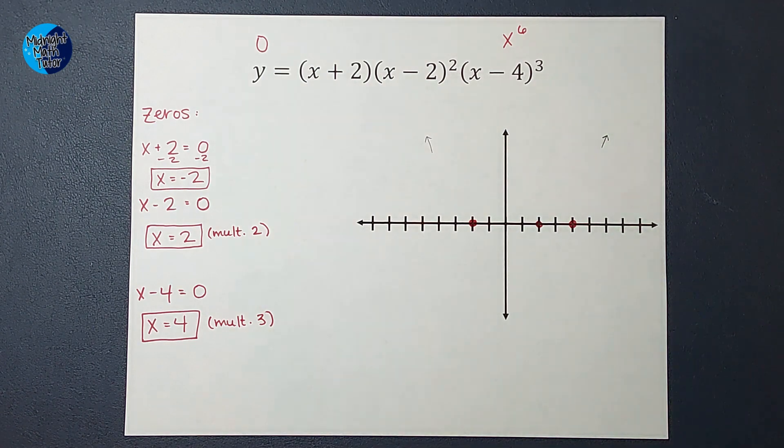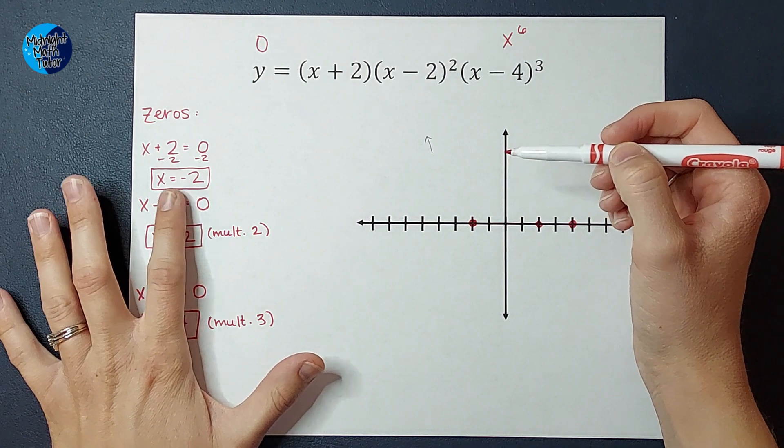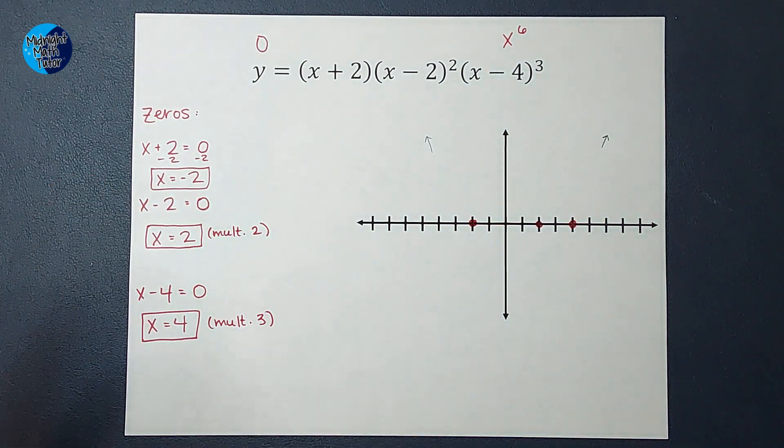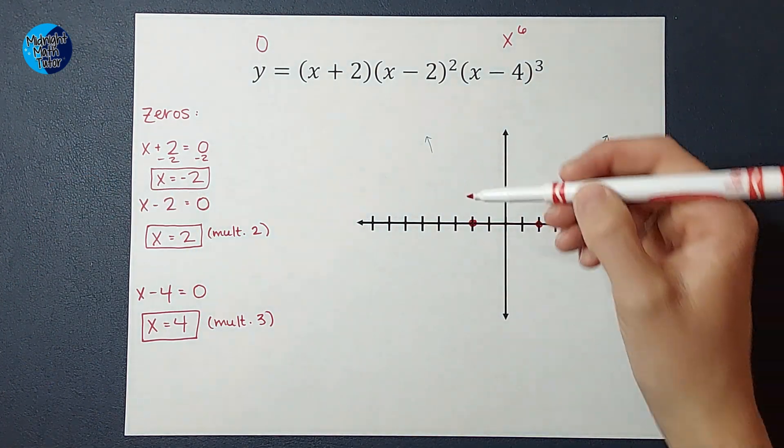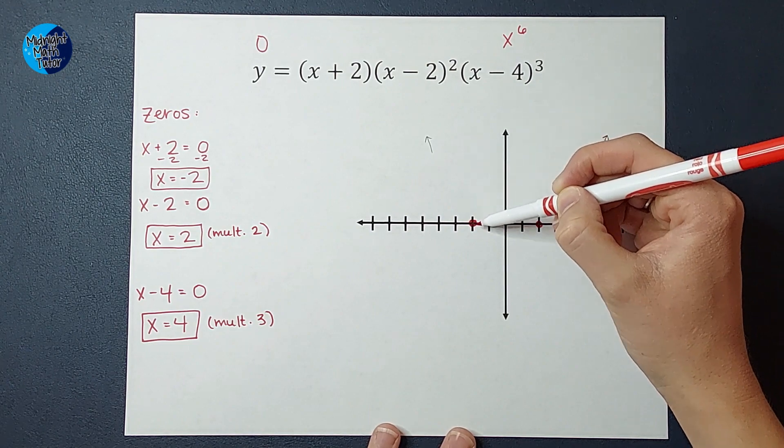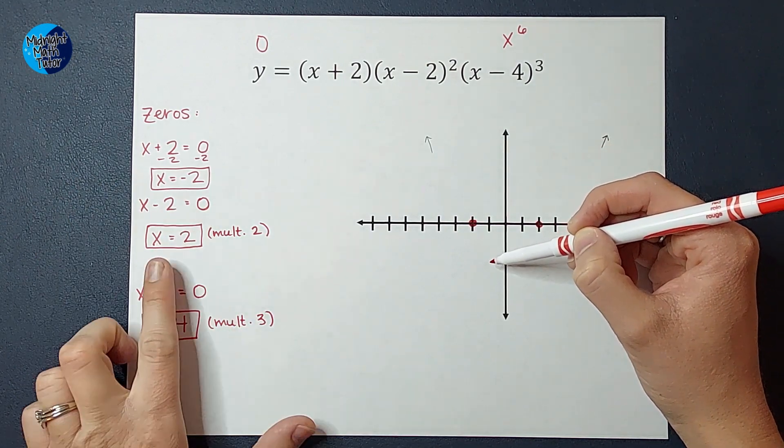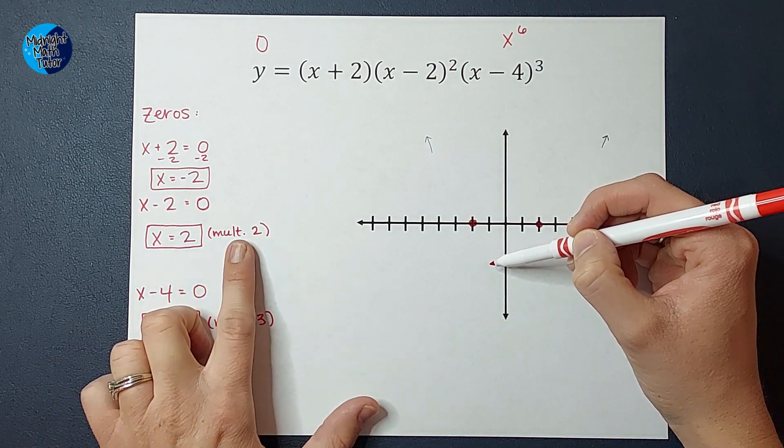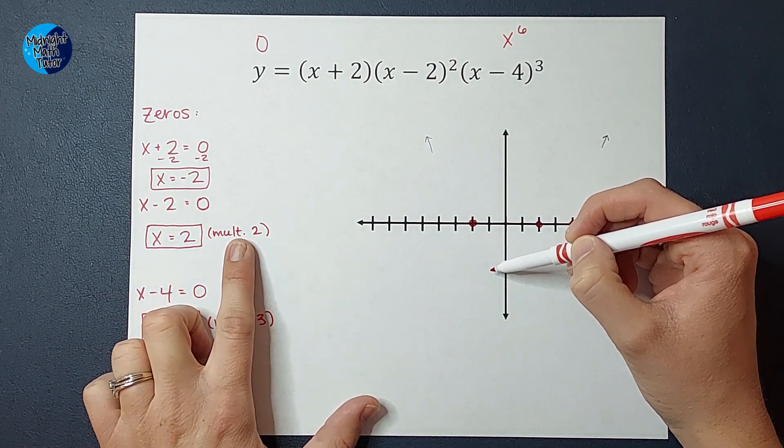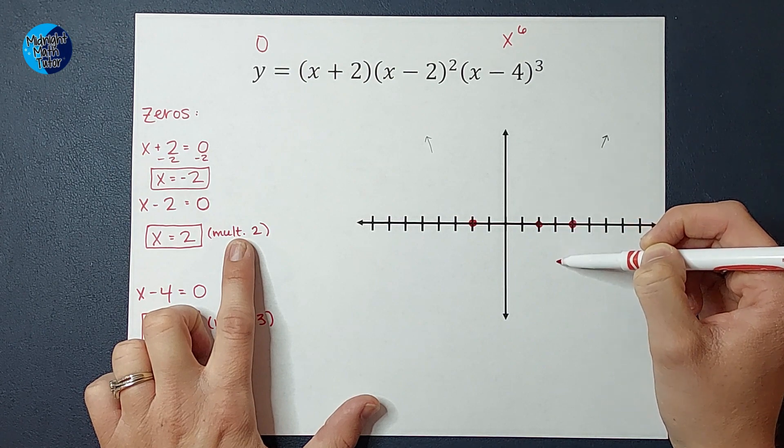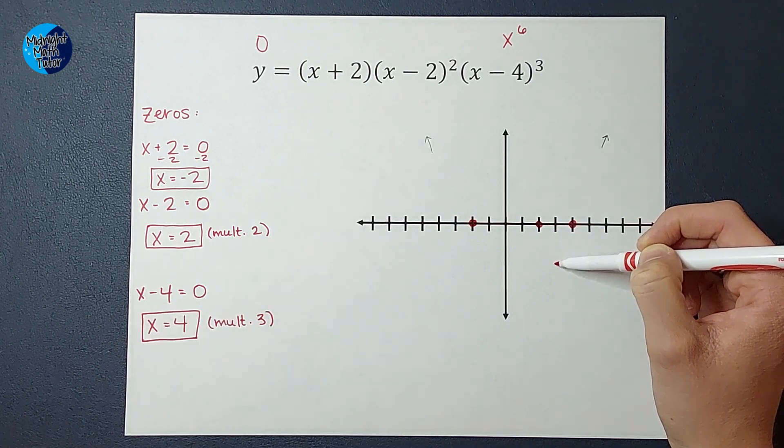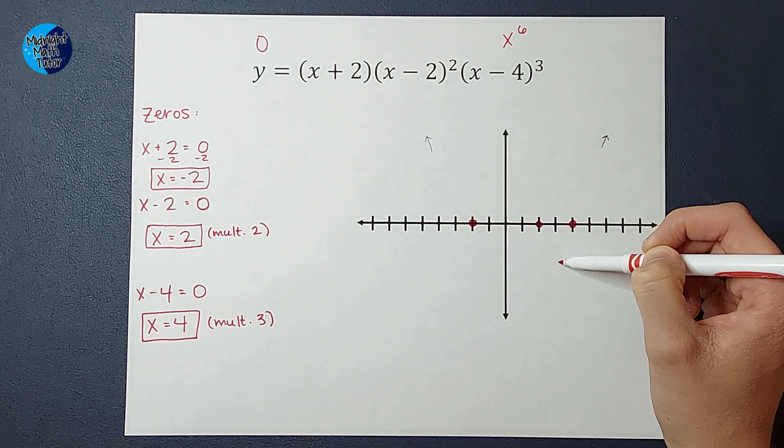So, for example, I've got x equals negative 2. There was just one of those. So it really had a multiplicity of 1. So my graph is going to go through the point at negative 2. Then at 2, we had a multiplicity of 2. It's even, so that means it's going to bounce off that point, kind of like a parabola. That would be like an upside-down parabola.